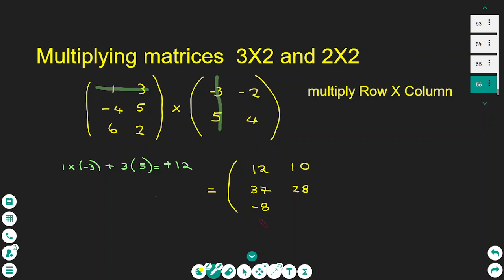And I also do 6 times negative 2 plus 2 times 4, and this gives me the number negative 4. And now the new matrix is complete and this is the result.